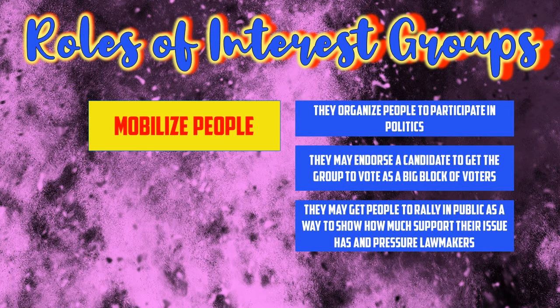Finally, like political parties, interest groups have to mobilize people. They play a role in organizing people and putting them in position to effectively advocate for policy change. They may do this by endorsing a candidate they think will make the changes they want, helping to mobilize a large block of voters. They may also try to get people to rally in public — like we saw in the picture of Moms Demand Action having a public march — to show how much support they have and attract more public support to pressure lawmakers.